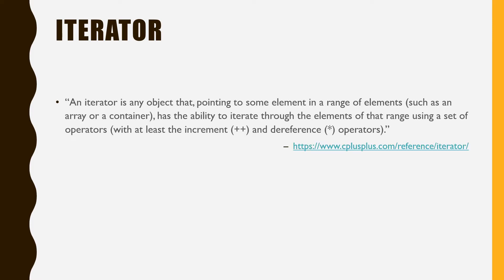Let's take a look at the definition of iterator from c++.com. An iterator is any object that, pointing to some element in a range of elements, such as an array or a container, has the ability to iterate through the elements of that range using a set of operators, with at least the increment plus plus and the dereference star operators. From the definition, we know that iterator is often implemented as a class that is nested in the main data structure class. That is, an iterator class for a linked list should be defined within the linked list class.